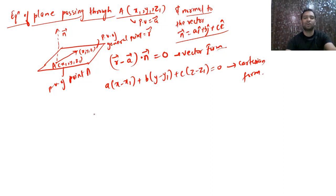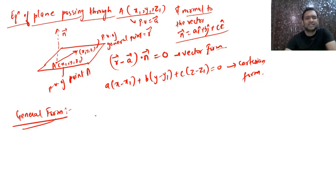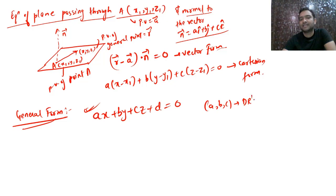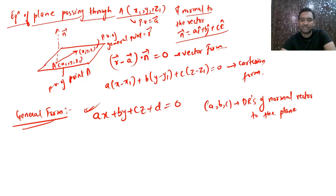The general form of a plane is ax + by + cz + d = 0. In 3D, any equation of this form represents a plane. Here a, b, c are the direction ratios of the normal to the plane. Next is the equation of a plane through three points.